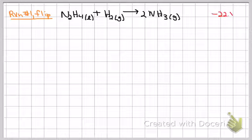By flipping it, that means that the sign for the enthalpy change of that reaction flips also. So it goes from being positive 22.5 to a negative 22.5.